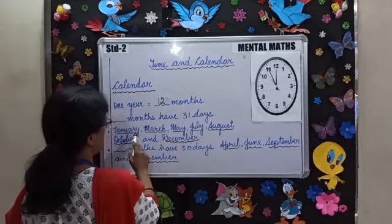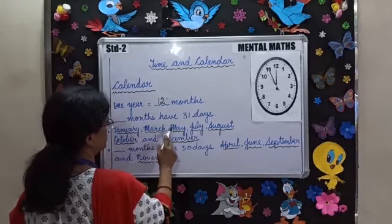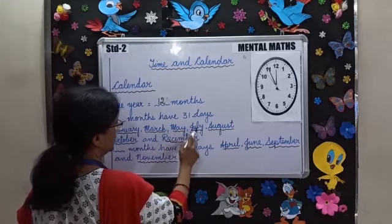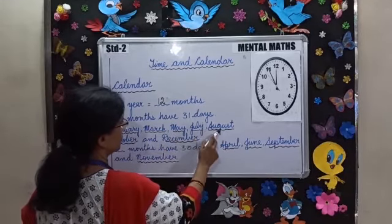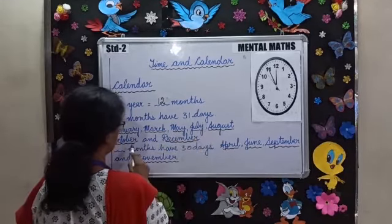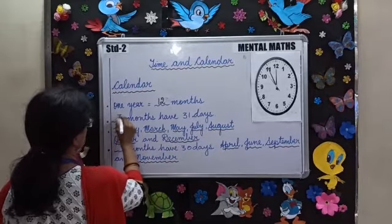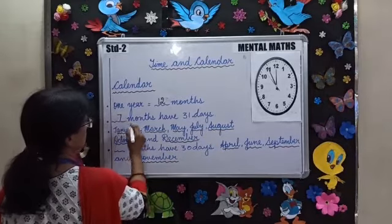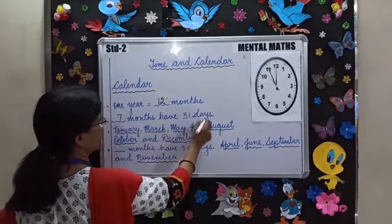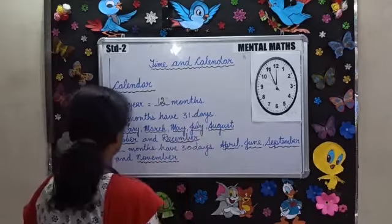That is 1, 2, 3, 4, 5, 6 and 7. So 7 months have 31 days.